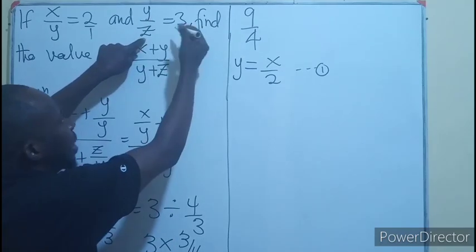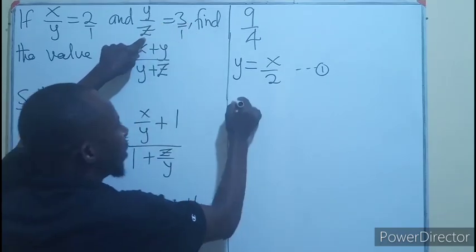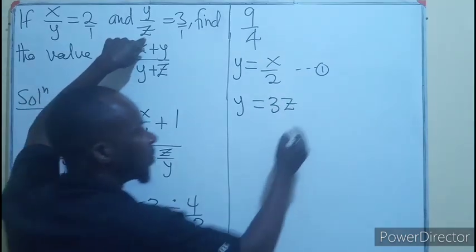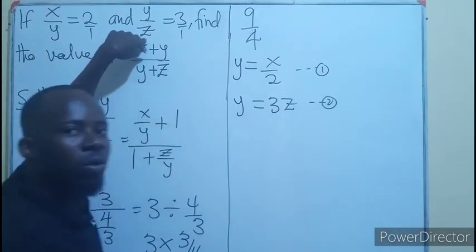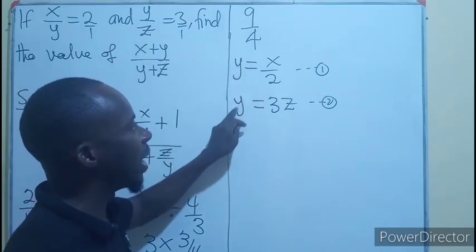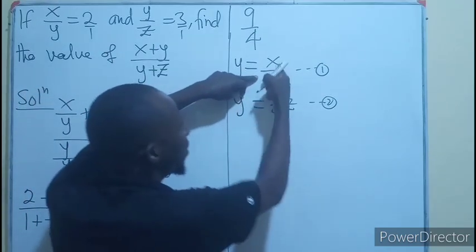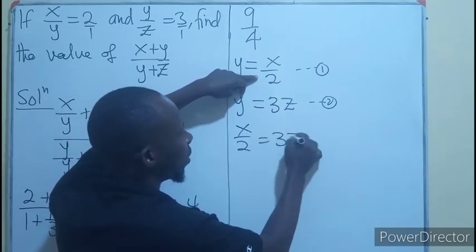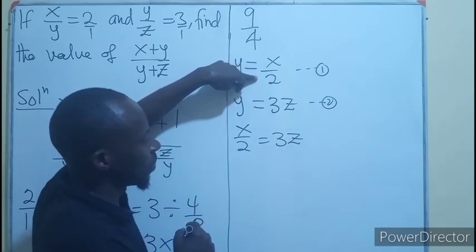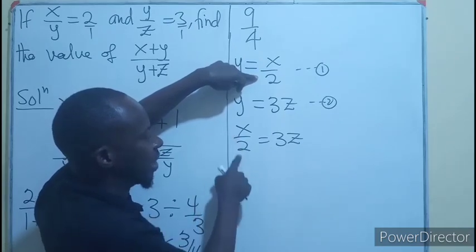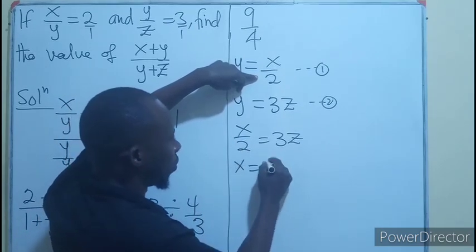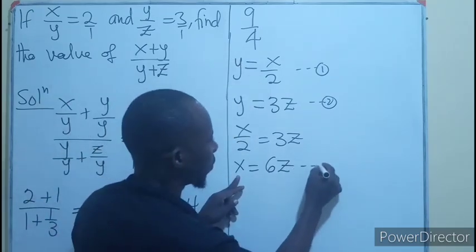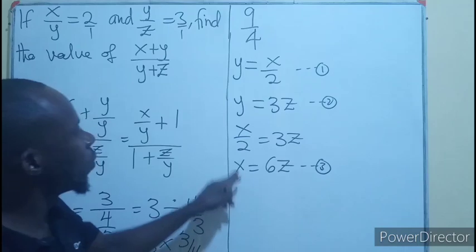From here, making y the subject will also mean that y is equal to 3z, equation 2. Knowing very well that y is y, then we can say that x over 2 is equal to 3z. Let's make x the subject. So x will be equal to 6z. So we know x, we also know y.